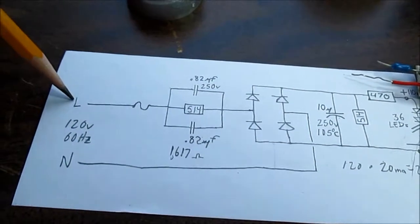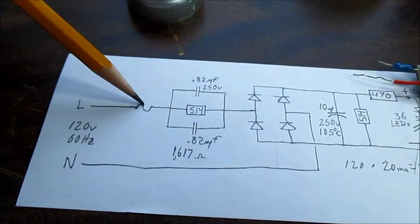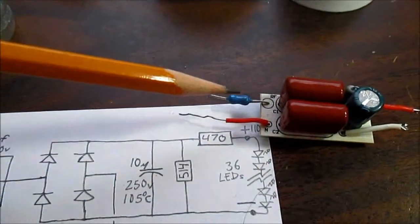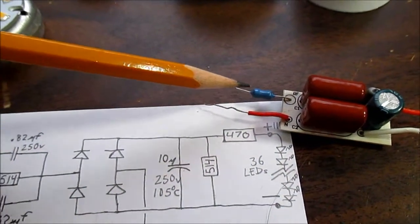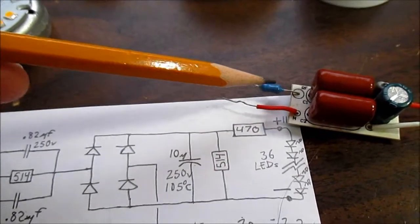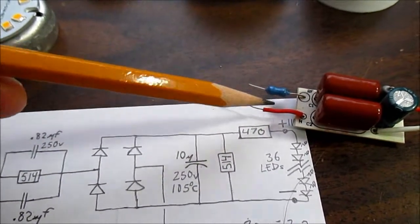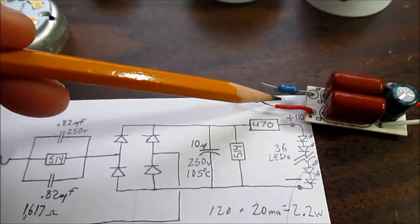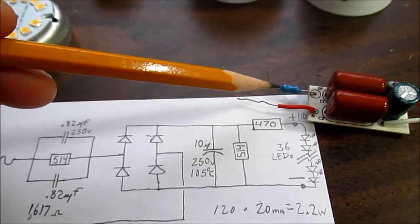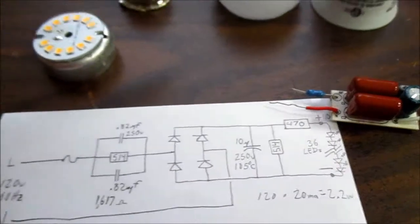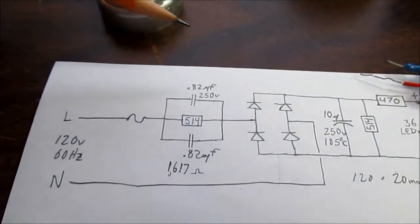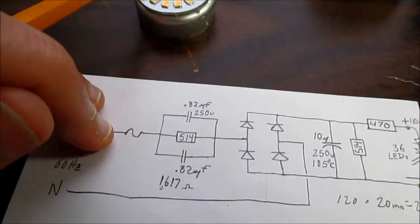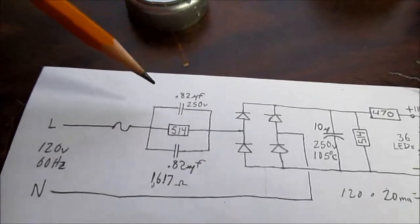And I sketched out the schematic. So your line voltage comes in here, it goes into a little fuse. This had heat shrink on it, so I cut that off. I was hoping to see like a number or something, but it's just plain, so I don't know. It's probably like a one amp or half an amp fuse or something like that, just in case there's a short or a failure. It'll protect the circuit, prevent fires and stuff.